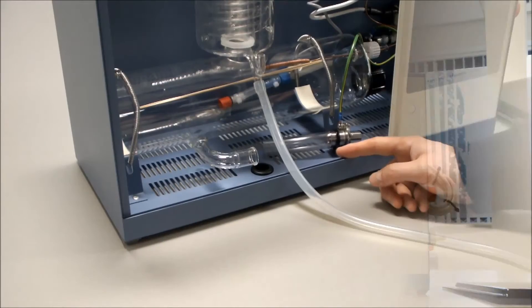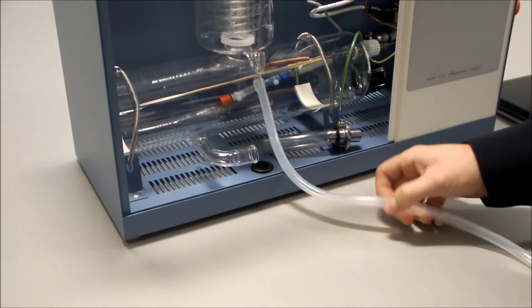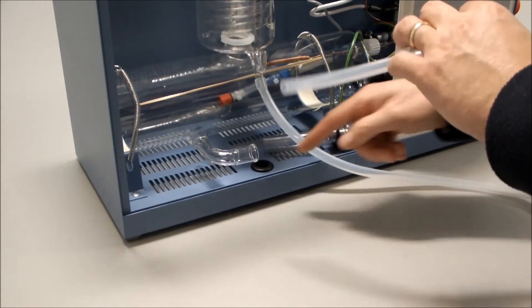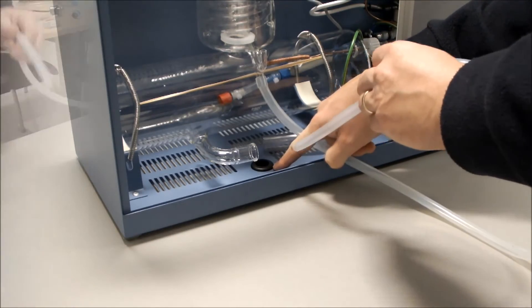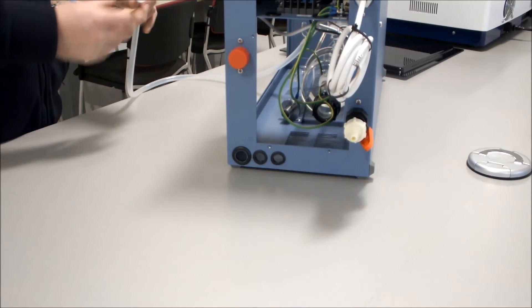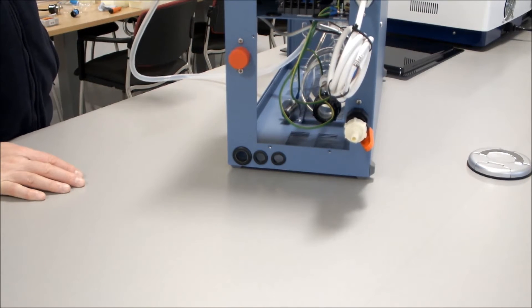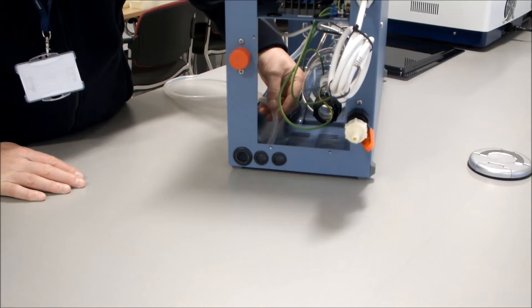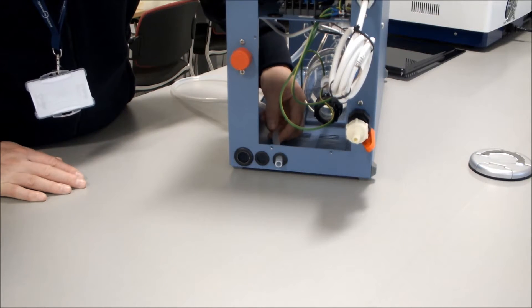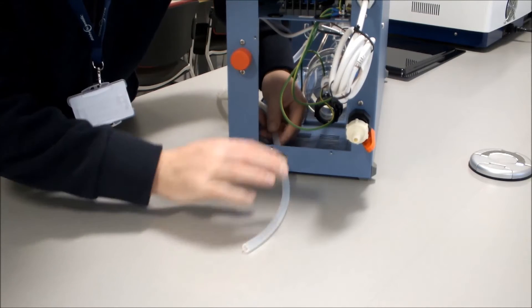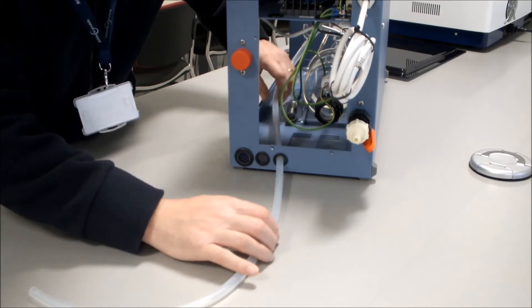If the unit is to be wall mounted then the distillate output tube can be fitted through the hole at the bottom. If the unit is to be bench mounted then the tubing can be fed from the inside to out through either of the two small holes. For this demonstration I will put it into the furthest of the three holes.